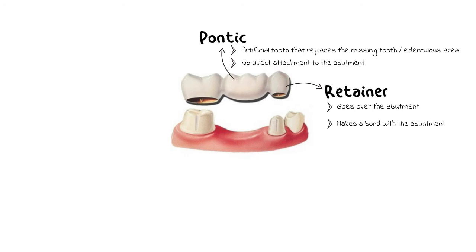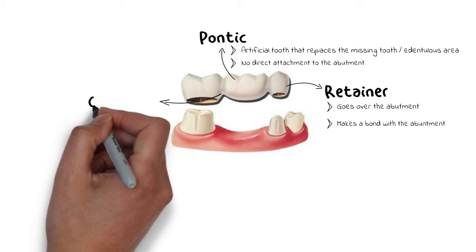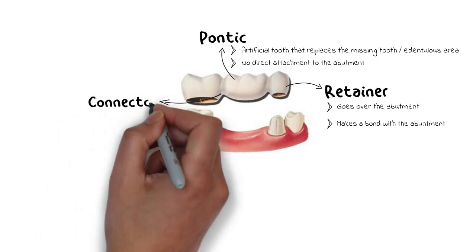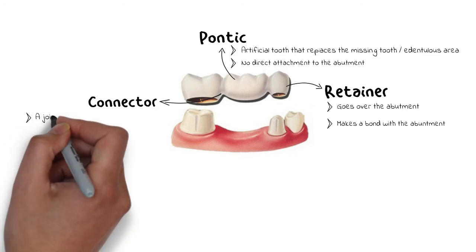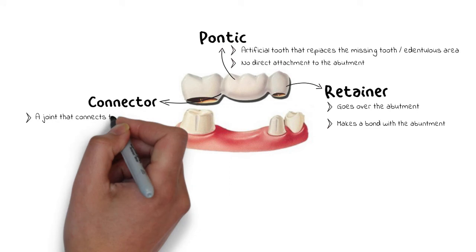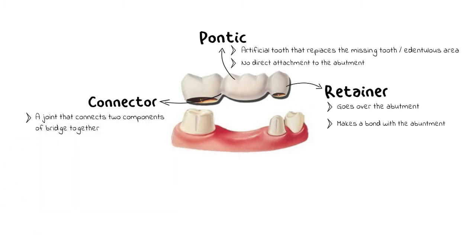To be effective in function, both the retainer and pontic need to have a connection between the two. This connection is provided by the third part, known as the connector. The connector is the part that connects a pontic to a retainer, or it can also connect two retainers to each other in a bridge that has more than one retainer on one side. So the connector is basically a joint connecting a pontic and a retainer, or two retainers to each other.